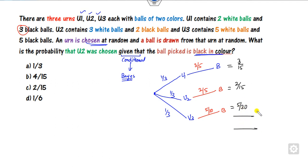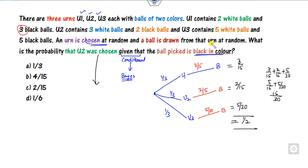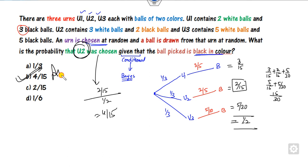What is the total? You can simply add them: three by fifteen plus two by fifteen plus five by thirty. Thirty is the LCM, so it becomes ten plus four plus five, giving one by two. Now, what is the probability of the second urn? It is two by fifteen divided by the total one by two — that is the right answer of this problem. This is the shortcut: you can simply draw the figure and compute it.